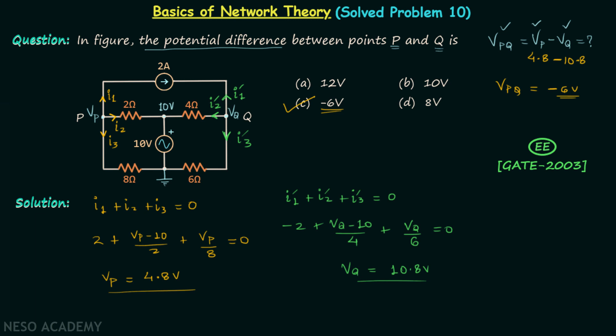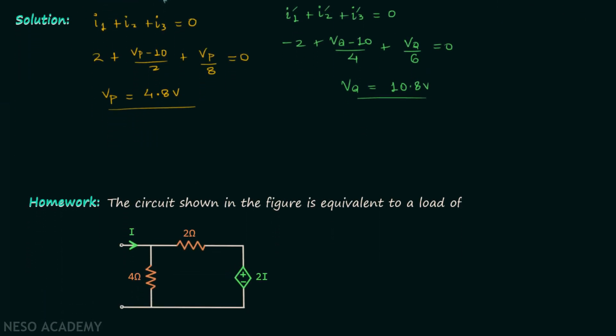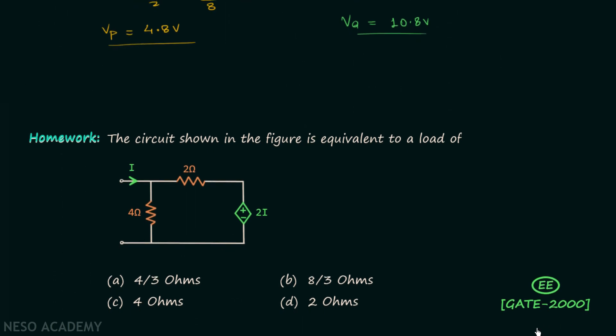In the homework problem I have taken one question from GATE 2000 electrical paper. In this question you are required to find the equivalent load, that is you are required to find the equivalent resistance between this terminal and this terminal. So try to solve this question and once you have your answer post it in comment section. Now I will end this lecture here, see you in the next one.